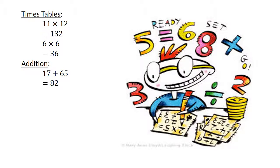Subtraction: 24 minus 58 equals negative 34. Division: 99 divided by 9 equals 11.